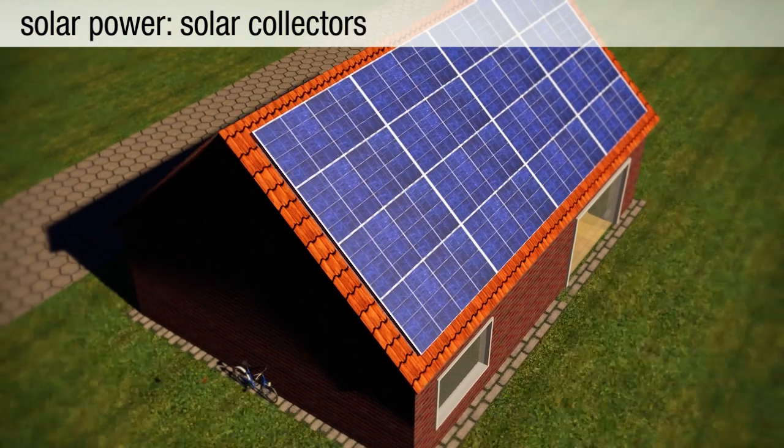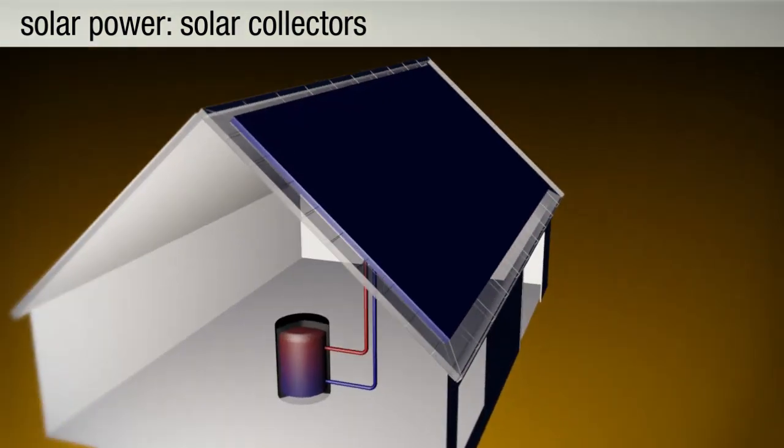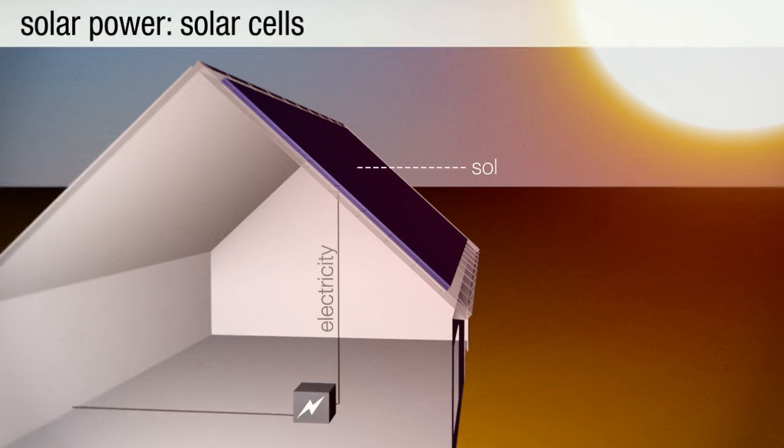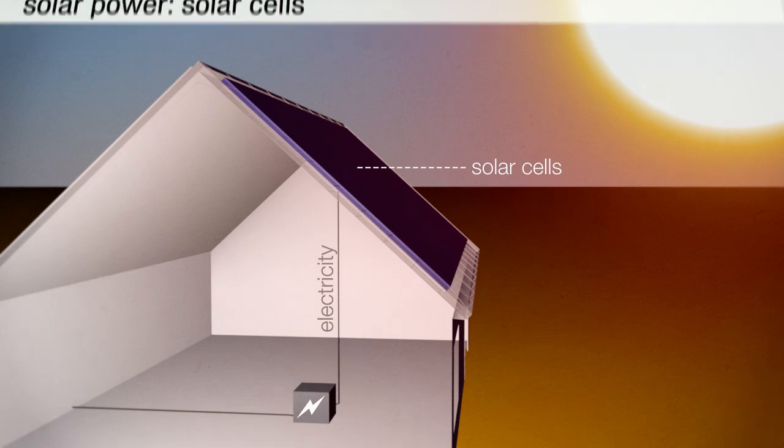There are two major forms of solar energy. Solar collectors heat a transmission medium with the sun's energy. On a small scale, this includes hot water heaters for individual households. On a large scale, concentrated solar power plants produce electricity. Solar photovoltaic cells convert the sun's rays directly into electricity. These systems are often installed on rooftops.